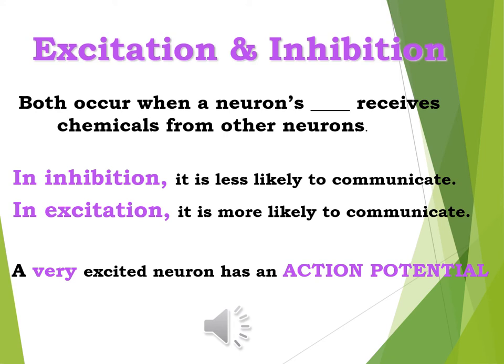Think of it like people: if two students are talking too much in the back of class, the teacher tries to inhibit them, making them less likely to communicate. If you're excited, don't you want to call or text a friend? Neurons are like people — inhibited means less likely to communicate, excited means more likely. If a neuron is very excited, a process begins called an action potential.